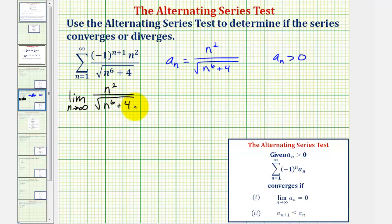There is a shortcut for determining this limit. If we look at the degree of the numerator and denominator: if the degree of the numerator is higher than the degree of the denominator, the limit approaches positive infinity. If the degrees are equal, the limit is equal to the ratio of the leading coefficients. And if the degree of the denominator is larger, then the limit is equal to zero.